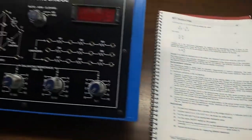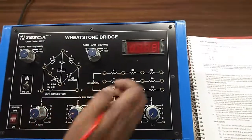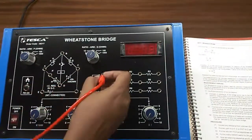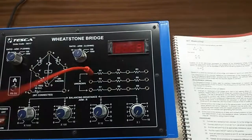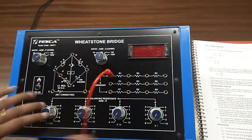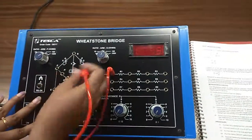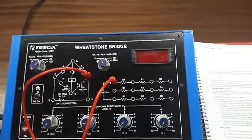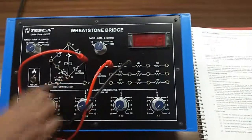First we will connect any unknown resistance. We are taking R1 and connecting it here between point C and D.